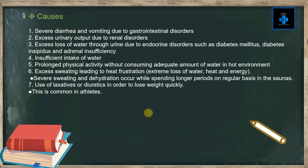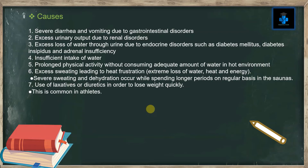Causes: Number one, severe diarrhea and vomiting due to gastrointestinal disorders. Number two, excess urinary output due to renal disorders. Number three, excess loss of water through urine due to endocrine disorders such as diabetes mellitus, diabetes insipidus, and adrenal insufficiency. Number four, insufficient intake of water. Number five, prolonged physical activity without consuming an adequate amount of water in a hot environment.